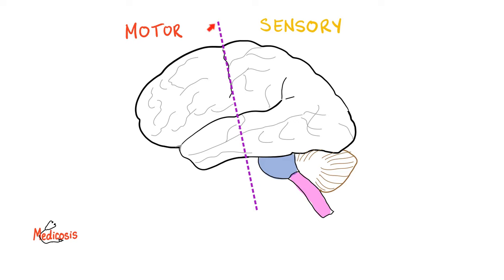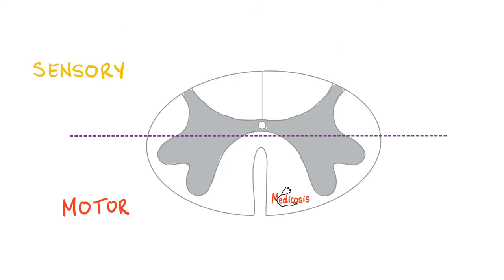Here is your brain. Draw a line in the sand: anything in front is motor, anything behind is sensory — with some exceptions. The name of this central line in the sand is the central sulcus, and yes, you see this in adults. In a cross section of your spinal cord: anything in front is motor, anything behind is sensory. This line is called the sulcus limitans. Do you see this in adults? No — it's only an embryological structure. Once you grow up, it disappears, but the concepts behind it remain.